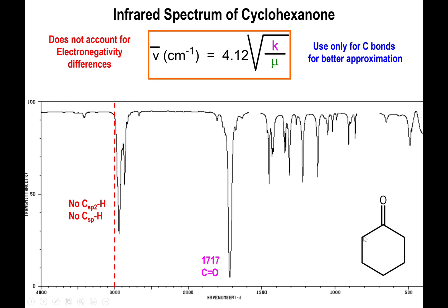Now let's look at the cyclic structure. We have cyclohexanone, which has, once again, a strong carbonyl peak at about 1717. And we don't have any peaks above 3000, because we don't have any alkene or alkyne C-H bonds. All the linear ketones and cyclohexanone fall around 1717.